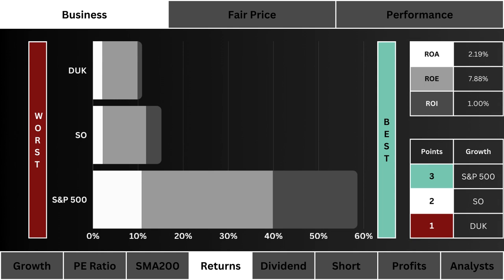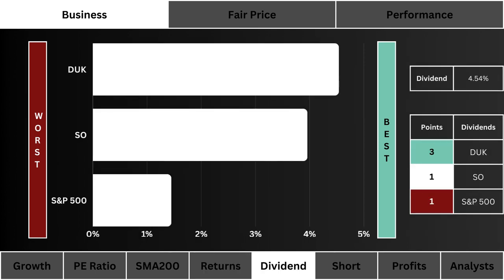For returns, what you see here is the ROA, ROE, and ROI of the three stocks. We want to figure out which stock is using its assets, cash, and investments most efficiently — the greater the overall return, the more efficient the stock's business.